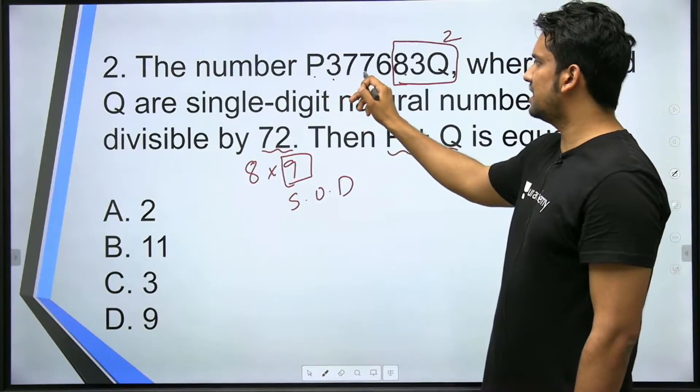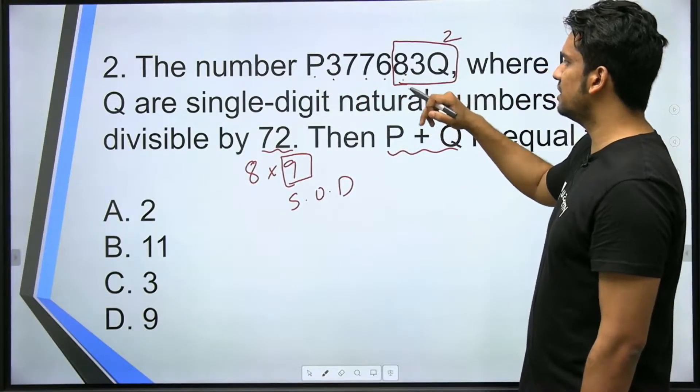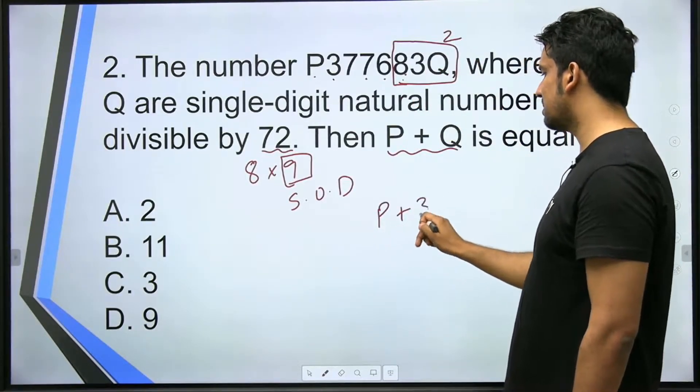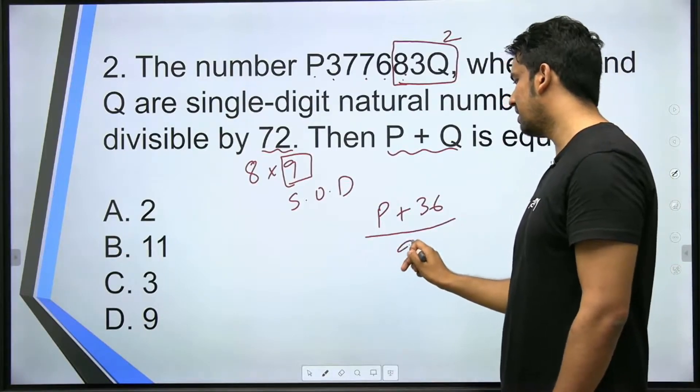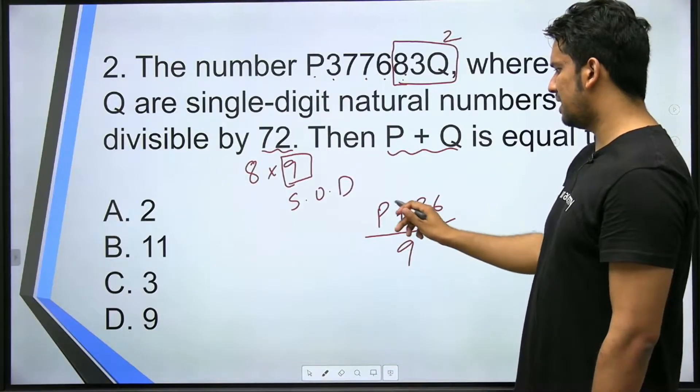So we'll add all the digits. How much will this be? 7 plus 3, 10 plus 7, 17, 6, 23, 8, 31, plus 3, 34, plus 2, 36. So P plus 36 should be divisible by 9.